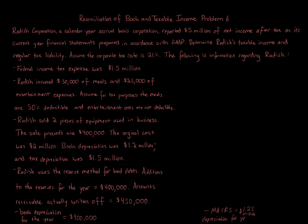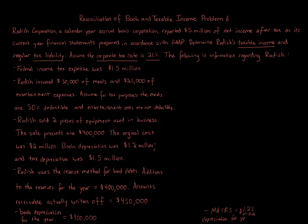This reconciliation of book to taxable income problem is not only asking for taxable income, it's also asking for a tax liability. Once you get taxable income, you just multiply it by the 21% corporate tax rate. Net income is always your starting point — here it's $5 million, reported in accordance with GAAP.